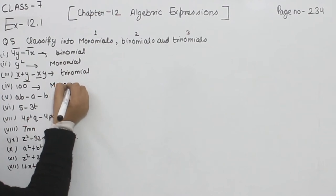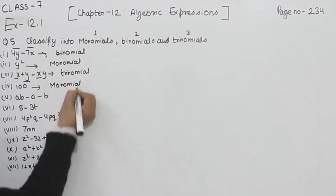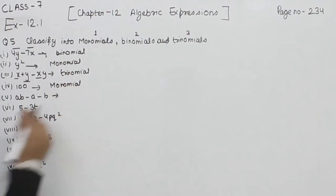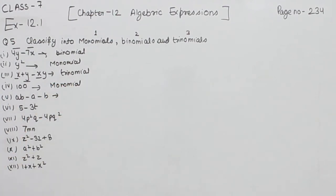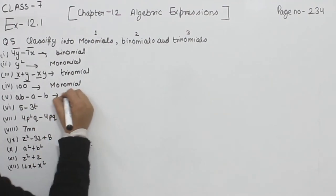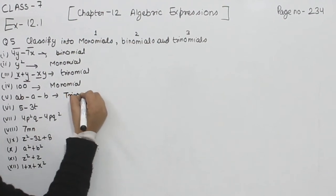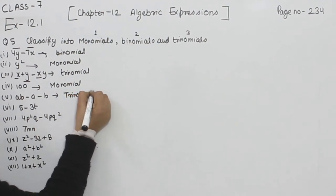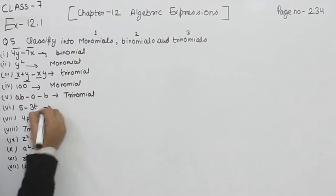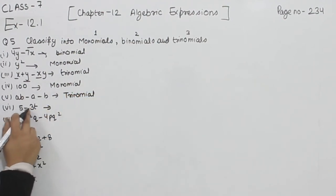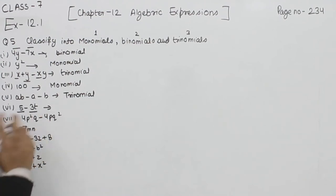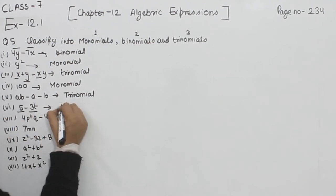So we are going to write here: monomial. Now ab minus a minus b — in this one we are having three terms, so this one is trinomial. Now this one is 5 minus 3t — we are having two terms.